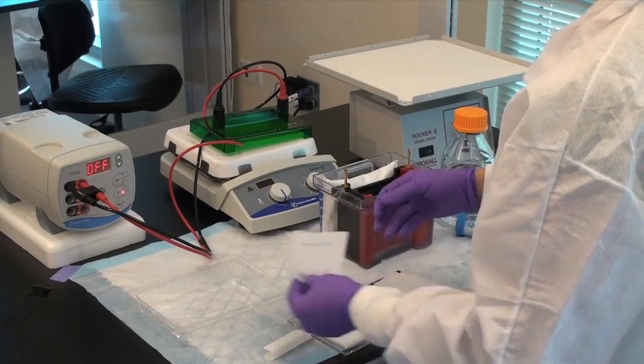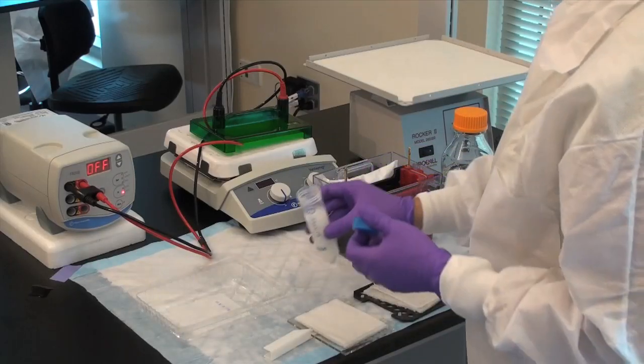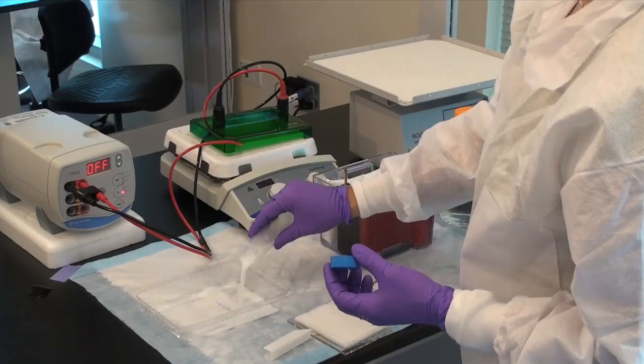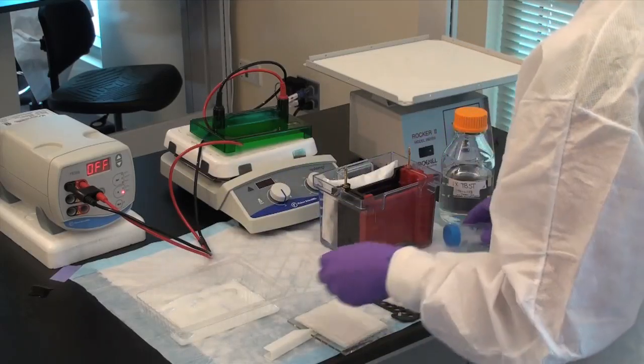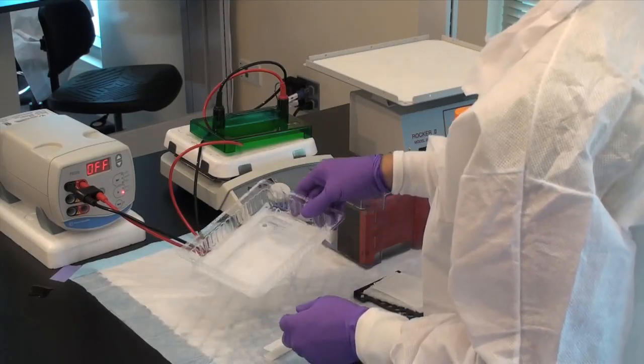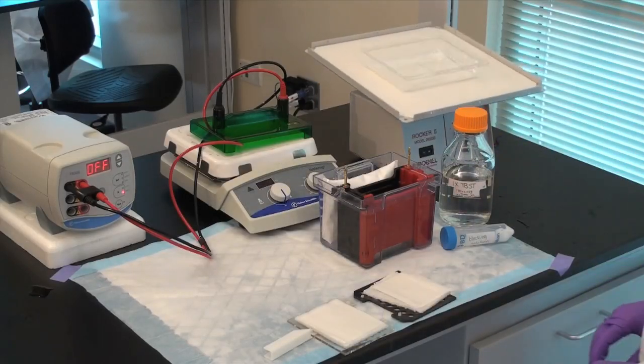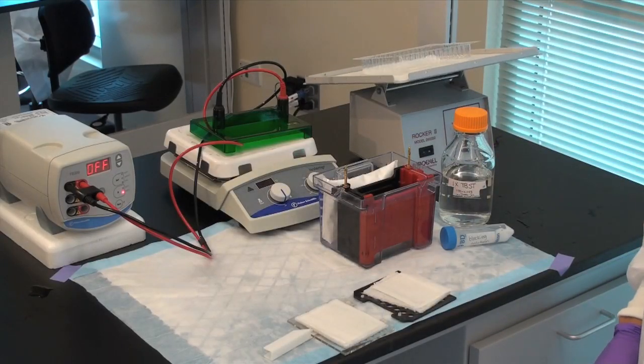Place the membrane into a small tray and add blocking solution. This is typically nonfat milk or BSA made up in a detergent containing buffer such as tris buffered saline with tween 20, TBST. Let this shake for about one hour at room temperature or overnight at 4 degrees Celsius.